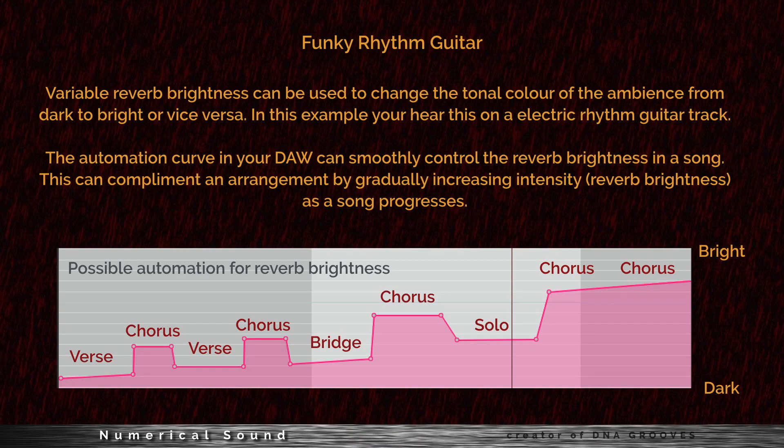Variable reverb brightness can be used to change the tone color of the ambience from dark to bright or vice versa. In this example, you will hear this on an electric rhythm guitar track. The automation curve in your DAW can smoothly control the reverb brightness in a song. This can complement an arrangement by gradually increasing reverb brightness as the song progresses, and you can see this in the automation graph below.